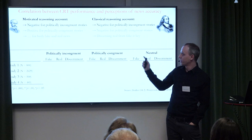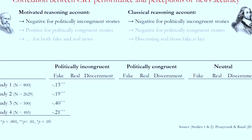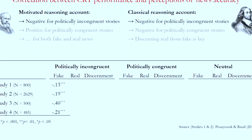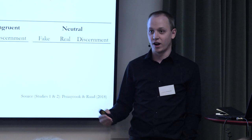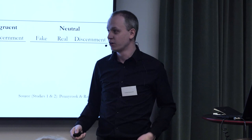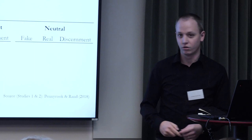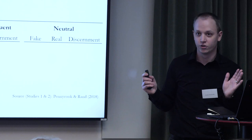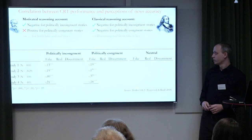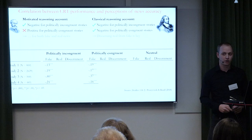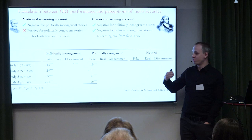Both accounts make the same prediction for fake headlines that are politically inconsistent — they both expect a negative correlation, so they both get check marks. What's more interesting is where they make different predictions: for fake stories that are politically congruent, the motivated reasoning account predicts a positive correlation because if you're better at reasoning you're better at convincing yourself those headlines are true. The classical reasoning account predicts it should be negative because reasoning helps accurate belief formation. And the correlation is in fact negative — negative to the same extent as for politically incongruent content. There's not even an interaction in terms of the size of the correlation.